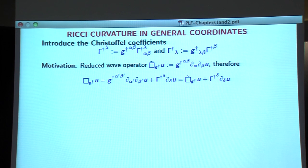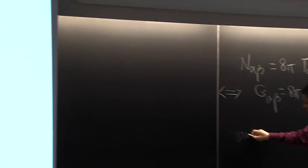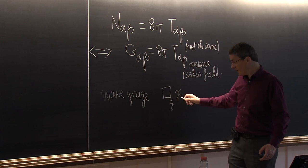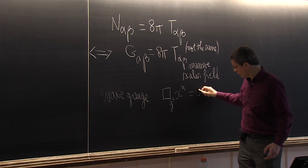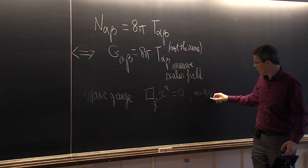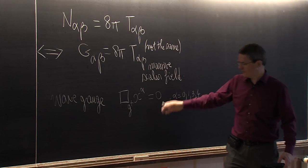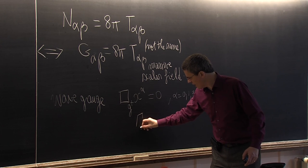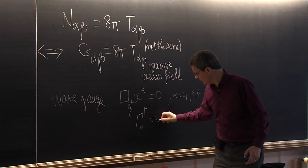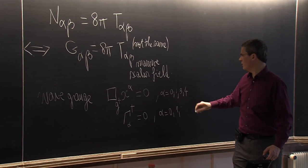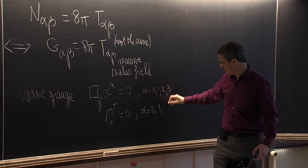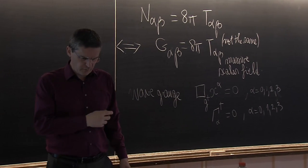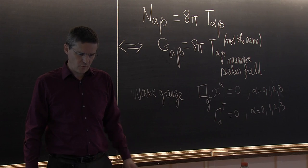The wave gauge condition is to assume that Box_{g†}(x^α) = 0 — each of the four spacetime coordinates should be a solution of the wave equation. This is exactly equivalent to saying that our Γ†_α are vanishing for α = 0, 1, 2, 3. So the vanishing of Γ_λ is our wave condition. Before we can see that fully, there are a few calculations to do: we first express the Ricci curvature in general coordinates.